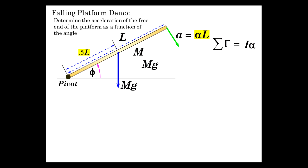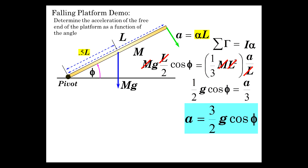So Mg times the perpendicular part of the radius arm. So that's L over 2 times the cosine of phi. So there's the torque and that's equal to I alpha. I is the moment of inertia pivoted about the end, which is one third ML squared times alpha, which is A over L. All right, so we have some cancellations. Oh, I like that. And so we have one half G cosine of phi equals A over 3. And thus A pops out as three halves G cosine of phi.